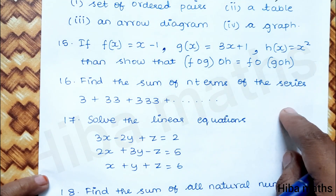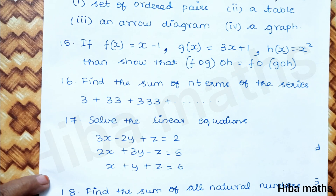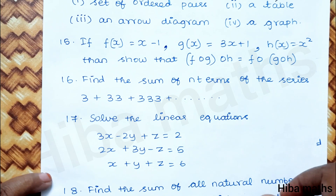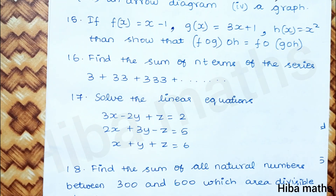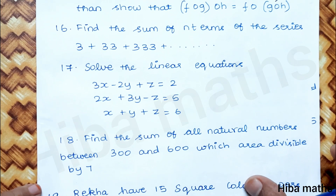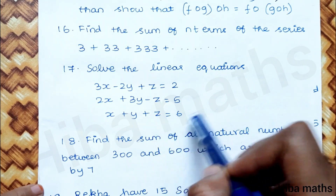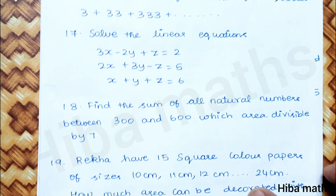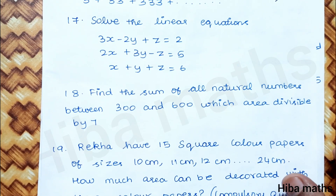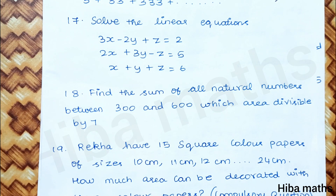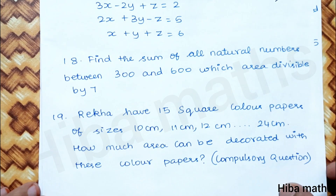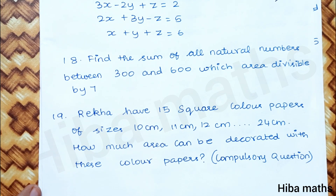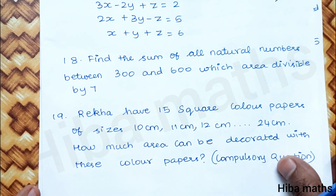At the 16th question, find the sum of n terms of the series. The 17th question: solve the linear equation. The 18th question: find the sum of all natural numbers between 300 to 600. Another 18th question option: you have 15 square color papers — cover all areas and decorate. This is a compulsory question.